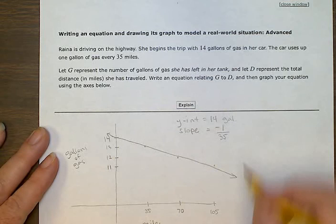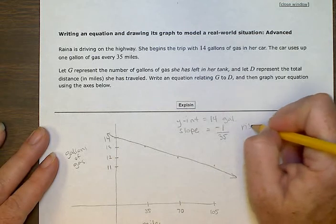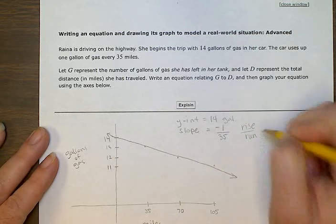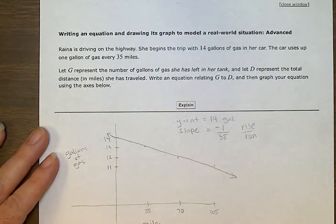Right? That was a rise over run kind of slope, right? Slopes always rise over run. So we use those numbers to help us decide what goes on the top of the fraction, what goes on the bottom.